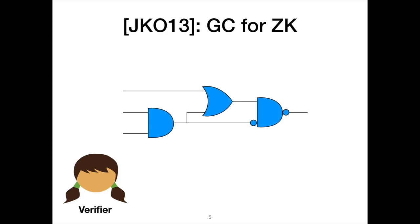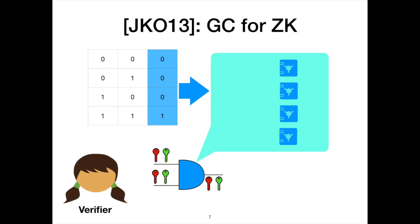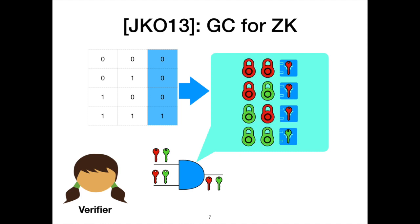In garbled circuits, the verifier chooses keys — labels for all of the wires — where each label is an encryption of either a logical zero or a logical one. Encryptions of zero are depicted as red keys and encryptions of one as green keys. For each gate, she considers the function of that gate and encrypts a truth table corresponding to the logic. The prover, when he gets only one key per wire, will only be able to unlock one row and can only get an output key corresponding to his input keys. By induction, he can only get an output green key if he has a satisfying input.